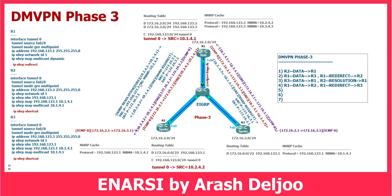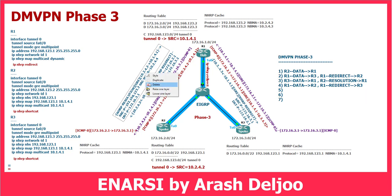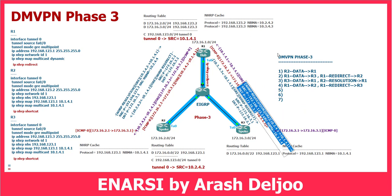R1 received this NHRP resolution message from Router 2. Because of that, R1 should answer, but when we receive a resolution message from Router 2 in R1, R1 doesn't answer it itself. Actually, Router 1 should re-encapsulate it to Router 3. As you can see, the resolution was sent from Router 2 to Router 1, asking about 172.16.3.1, reachable from next hop 192.168.123.3 with NBMA 10.3.4.3. We don't answer it ourselves — we should forward or re-encapsulate the NHRP resolution message to Router 3, and Router 3 should answer it itself, similar to DMVPN Phase 2. The next function is that R1 should re-encapsulate the NHRP resolution to Router 3.